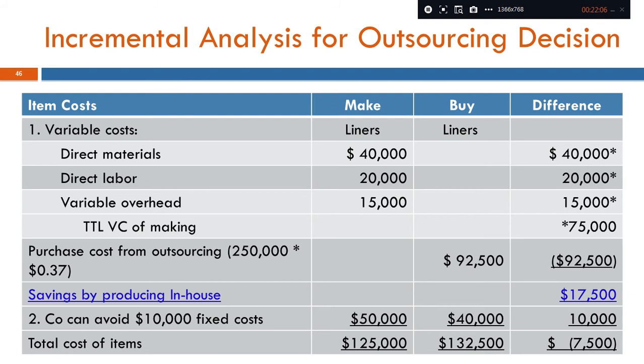If the company produces in-house, we must also consider fixed costs. Let's say the company can avoid $10,000 in fixed costs if it outsources. Fixed costs that can be avoided are relevant to the make or buy decision, while unavoidable fixed costs are irrelevant.